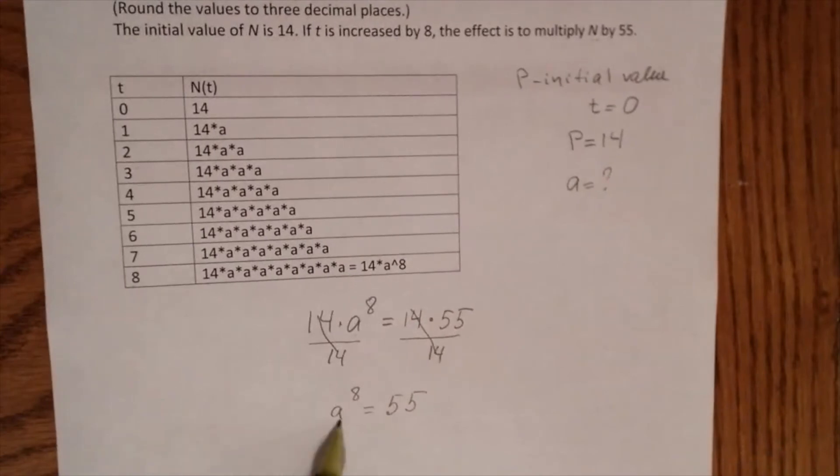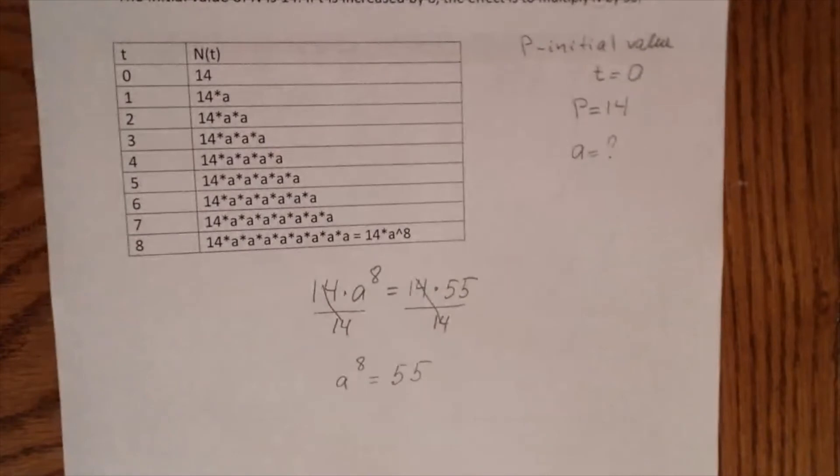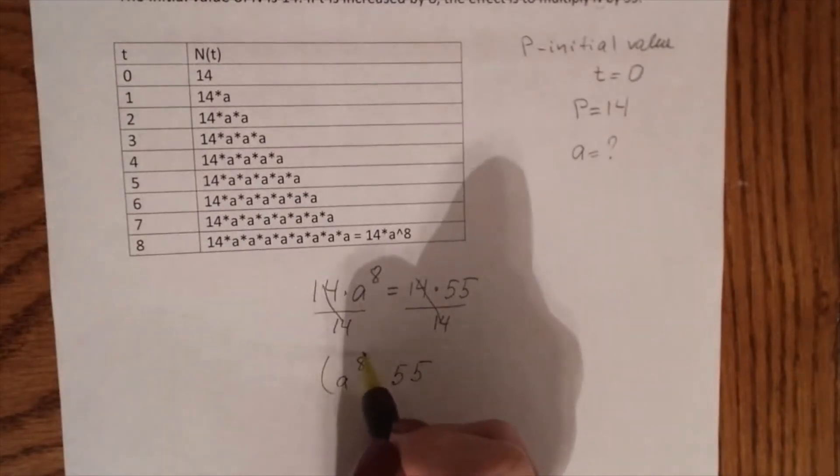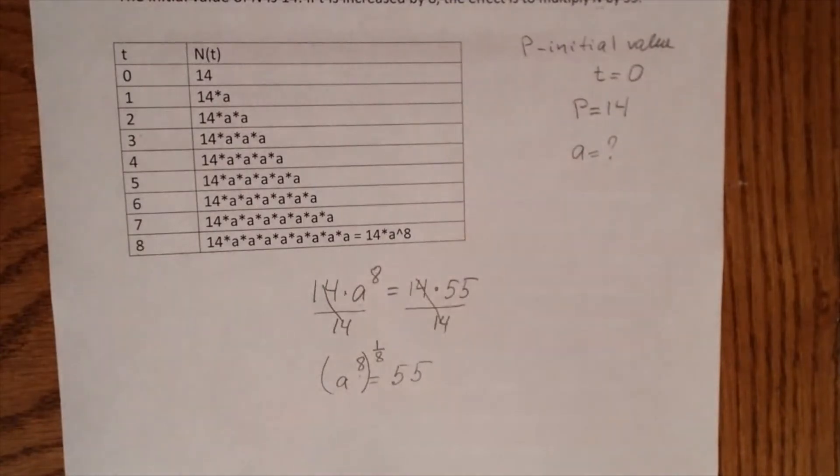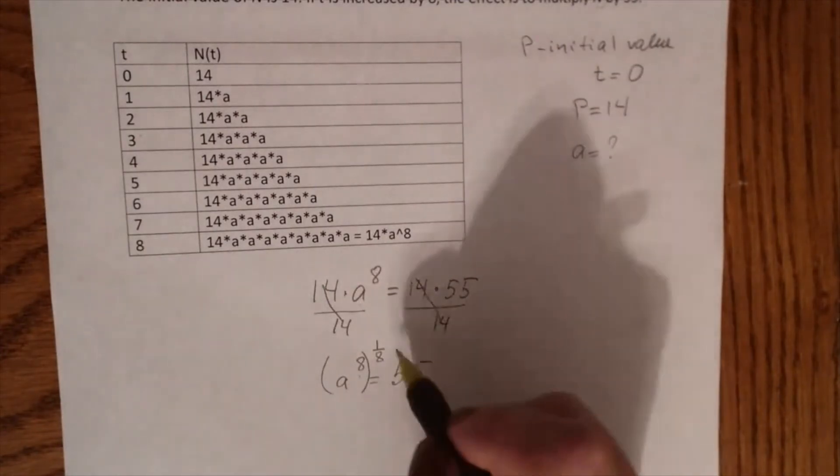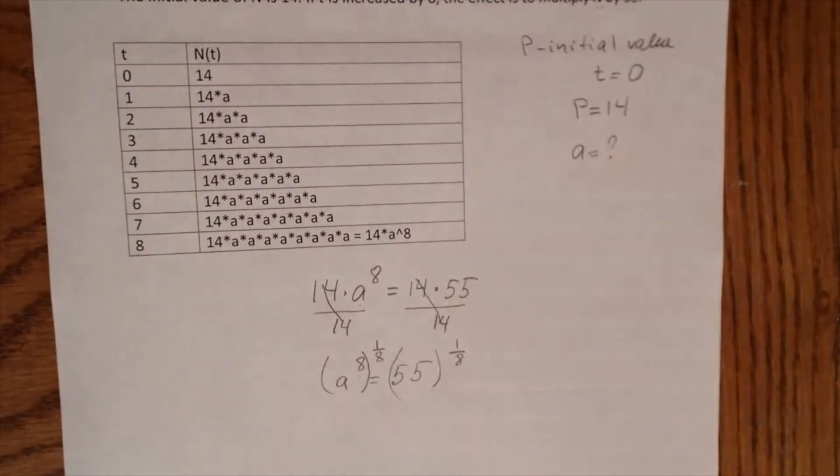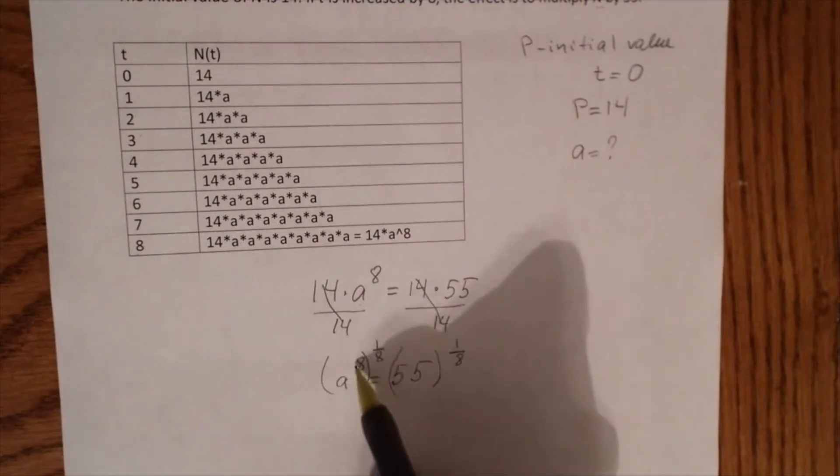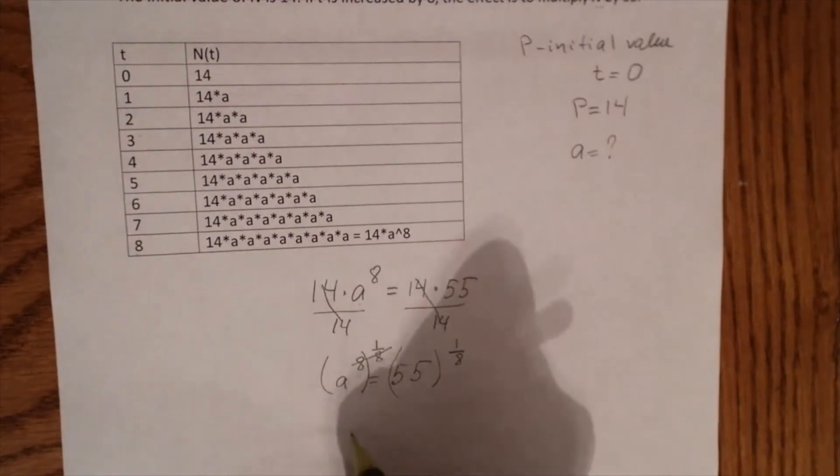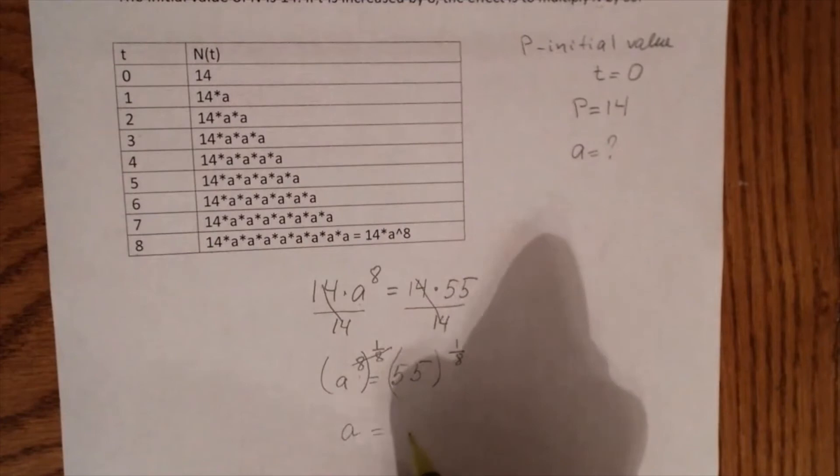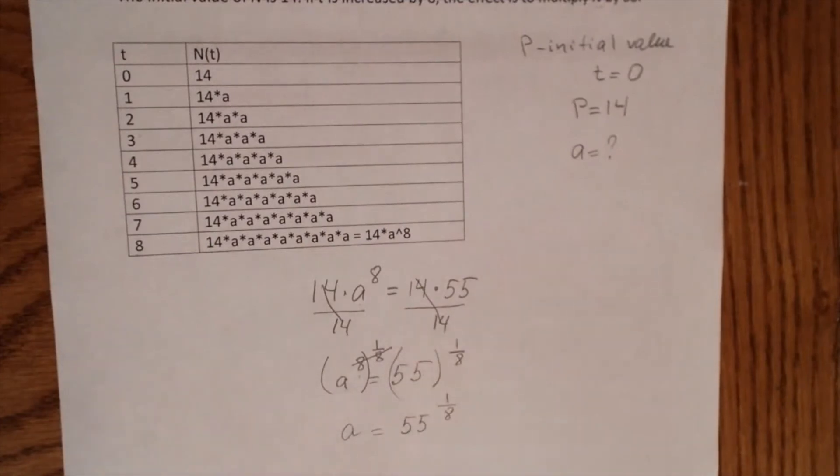To find a, we have to get rid of the exponent 8. To get rid of this exponent, we have to raise both sides to the power 1 over 8. So 8 times 1 over 8 will cancel out, and we will have a equals 55 to the power of 1 over 8.